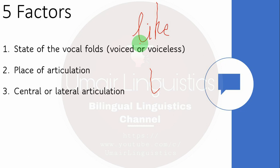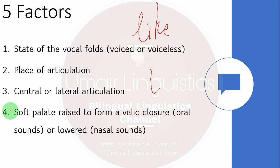While breathing in with your tongue in the /l/ position, you will feel cool air rushing through one side of your tongue — either the left or the right. This confirms that air passes through the sides of the tongue when we produce the /l/ sound. So only one consonant in English has lateral articulation, though other accents or languages may have more sounds with lateral articulation.